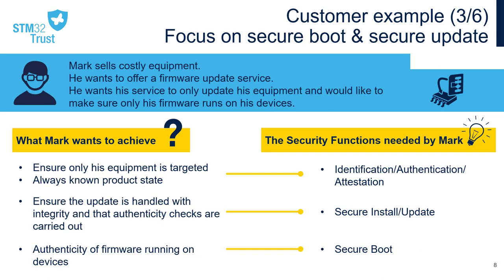Third example: Mark sells very expensive equipment which are not replaced very often, so he wants to offer a firmware update service — for instance, to upgrade the product features over time. But he wants this service to only update his equipment and cannot run on competitors' devices. He would also like to make sure only his firmware runs on his equipment, to prevent third-party firmware from being installed which could generate bad behaviors. To achieve this, Mark needs to identify and authenticate his equipment, implement a secure firmware update to check the integrity and authenticity of new software releases before installing it, and implement a secure boot to check the authenticity of the firmware running on his devices.